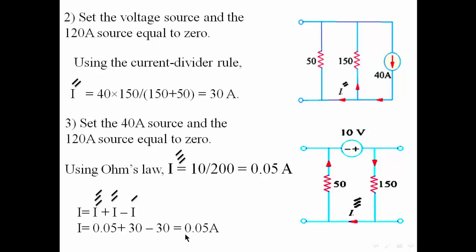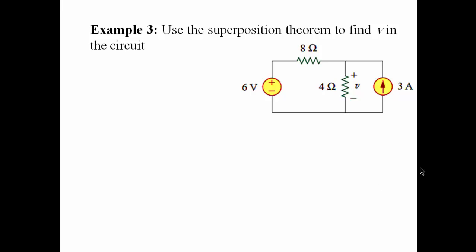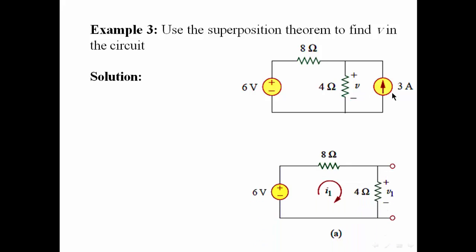And this is the final solution for this example. Example 3: Use the superposition theorem to find V in this circuit. First of all, we are going to set this source equal to 0, so it's replaced by an open circuit. And we just need to find the voltage V using the voltage divider rule, which equals 2 volts. We are going to call this voltage V1.